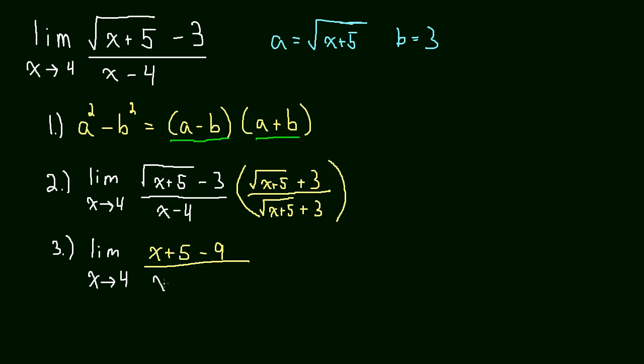And this whole thing will be divided by x minus 4. That's just left over. So x minus 4, I'll write it in white because that's left over from up here. And that's going to be multiplying the square root of x plus 5 plus 3.